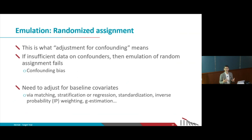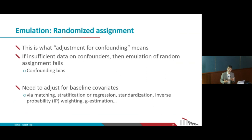How do we try to emulate randomization? By adjusting for confounding. When people say 'I am adjusting for confounding,' what they mean is: I'm trying to emulate a randomized assignment. If we could adjust for all confounders, there would be no difference between a randomized trial and an observational study. Of course, we don't know if we can adjust for all confounders — and that's why observational data for causal inference is risky.